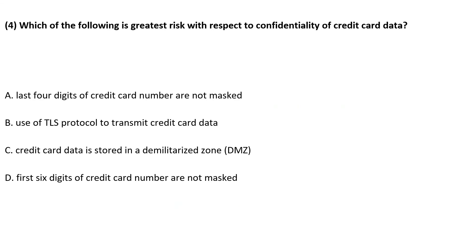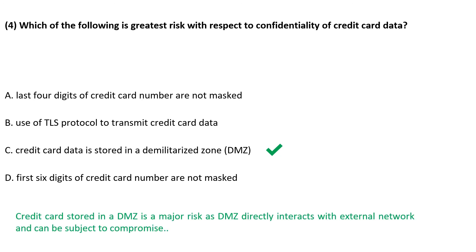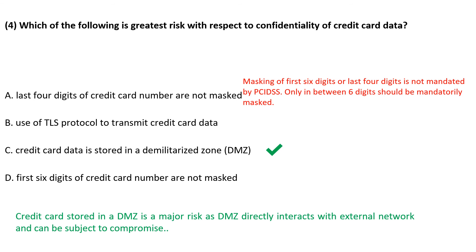Which of the following is the greatest risk with respect to confidentiality of credit card data? Storing credit card data in the DMZ will expose it to external attacks. Masking of the first 6 or last 4 digits is not mandated by payment card industry standards — only the digits in between should be mandatorily masked. TLS protocol is a secured protocol for data transmission.